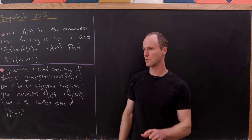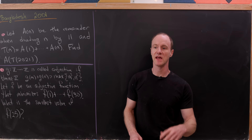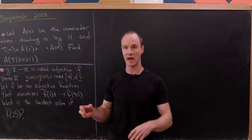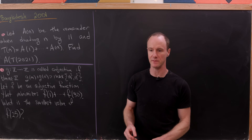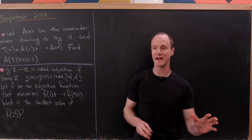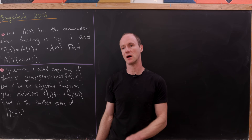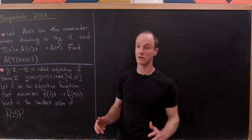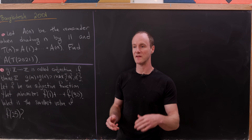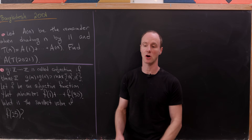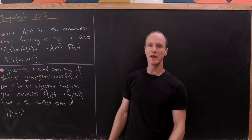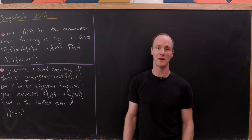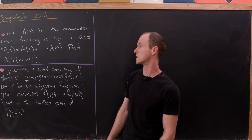Today we're going to do a little exercise where we look at a math contest and pick a problem from the beginning and a problem near the end, and solve both of them just to give an idea for the range of difficulty on math contest exams. Generally, problems are written so they go from easiest to hardest. Here we're looking at two problems from a Bangladesh 2001 Math Olympiad.